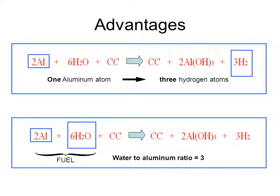The advantages of this process are that for every one atom of aluminum you get three hydrogen atoms. That's a pretty good deal. Also in the bottom box you can see that the only fuels are just aluminum and water.